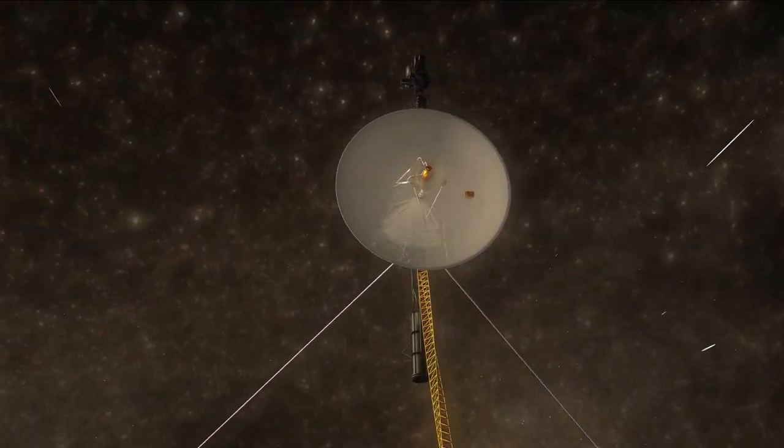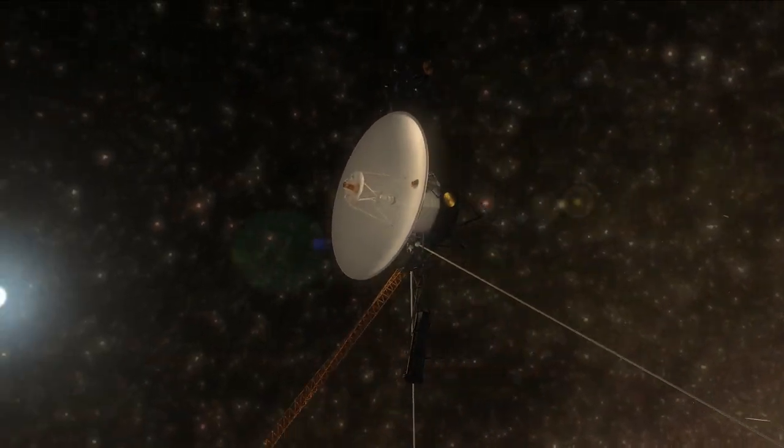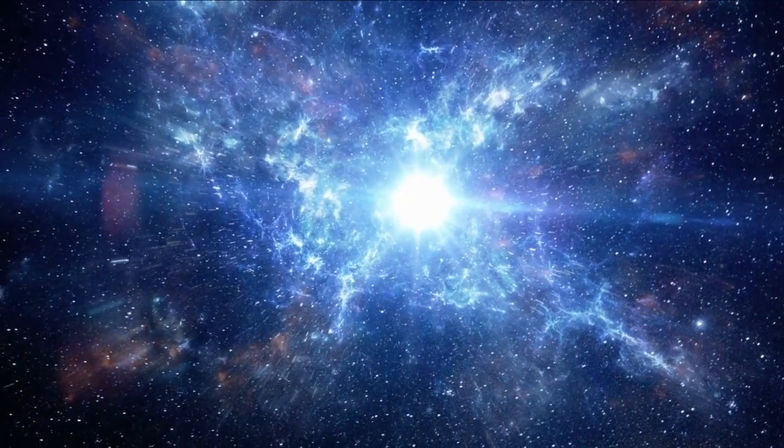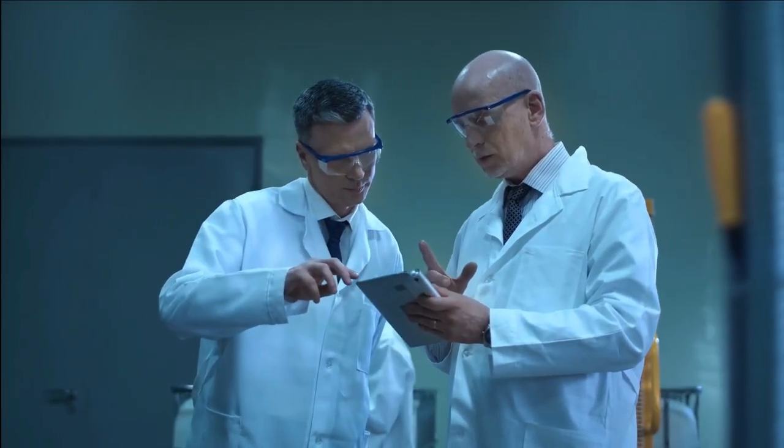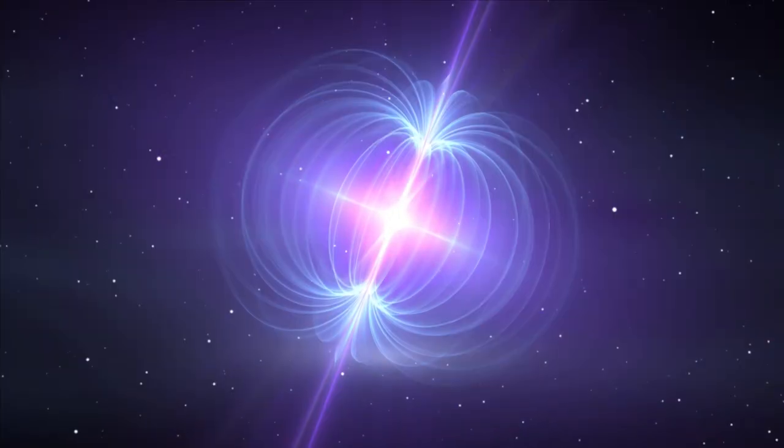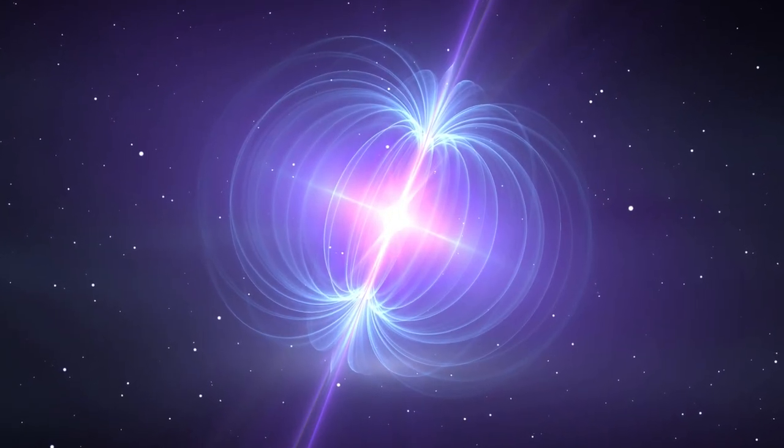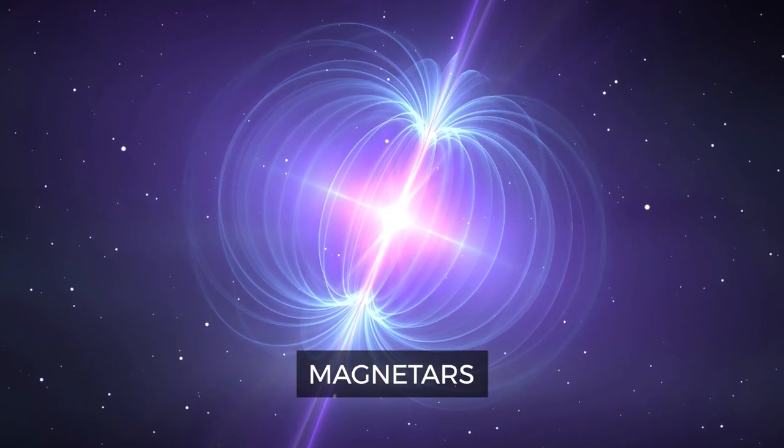Fast radio bursts are extremely brief bursts of radio waves that were first spotted in 2007 and usually originate billions of light years away. Until recently, scientists believed that the only thing that could cause such phenomena were powered by young, short-lived cosmic objects called magnetars.